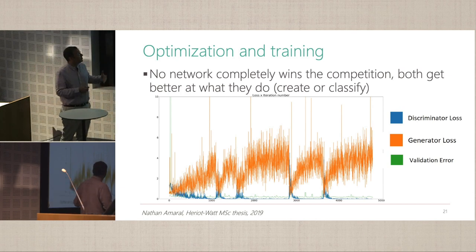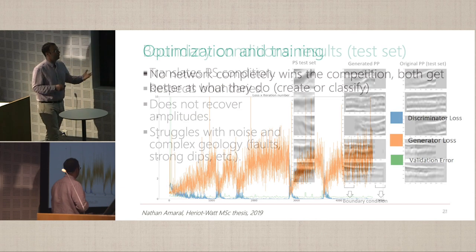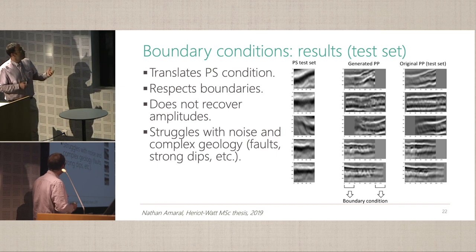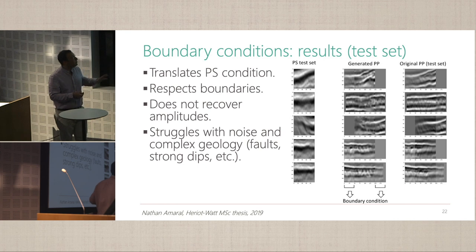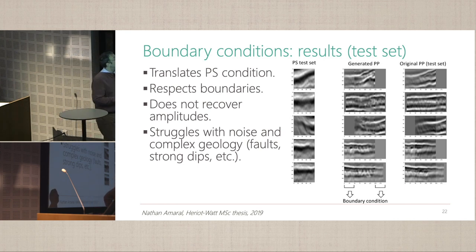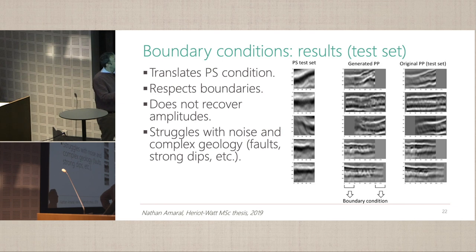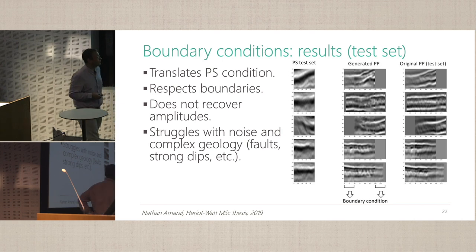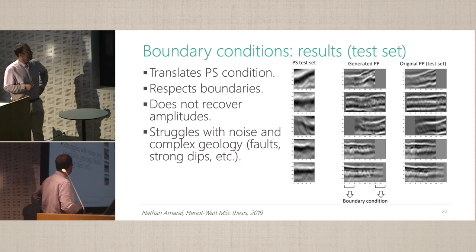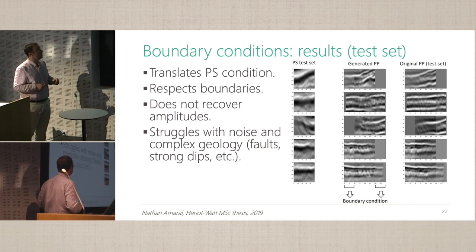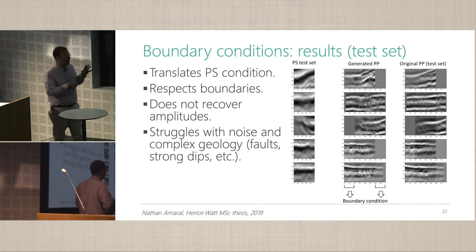Based on the test set, results were reasonably encouraging. The PS set was used initially, and the generated PP versus the reference test PP showed the GAN picking up some structures. But it did struggle with noise and complex geology, and it didn't recover the amplitudes, which we had to look at separately.